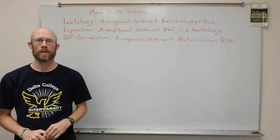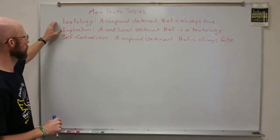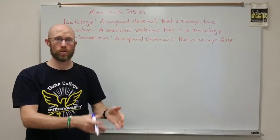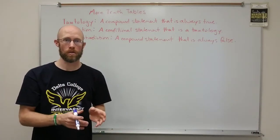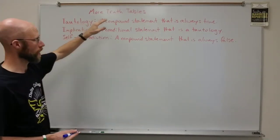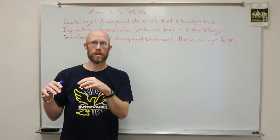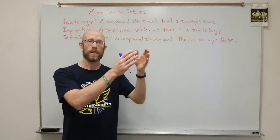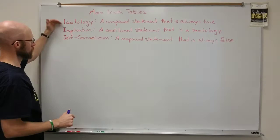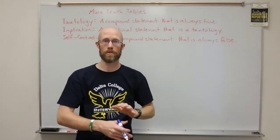A couple quick definitions before we continue with more complicated truth tables. There are some times when compound statements, when you build the truth table, will either be all true in the whole column or all false in the whole column. A tautology is a compound statement that's always true — the whole column in the truth table, no matter whether the simple statements are true or false or what combination, comes down to all truths. A self-contradiction is one in which they are always false — the whole column in the table is false, all F's.